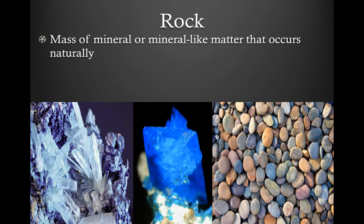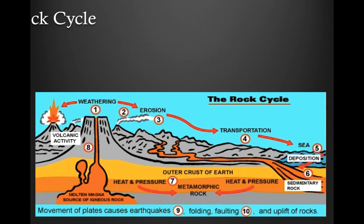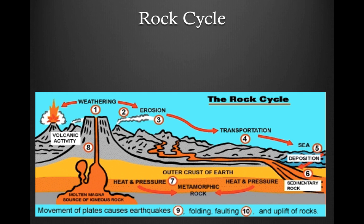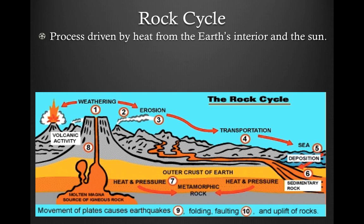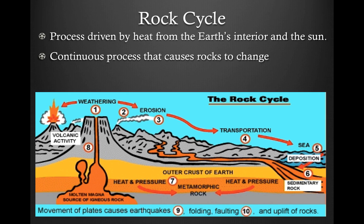All rocks are made from what's called the rock cycle, which is driven by heat. That heat comes from two places: inside the earth, mostly in the form of magma, or from the sun. The sun not only heats rocks on the surface but also causes weather, which allows rocks to be weathered and formed into new rocks. It's a continuous process — it never stops. Rocks are always changing, and this has gone on for millions of years.